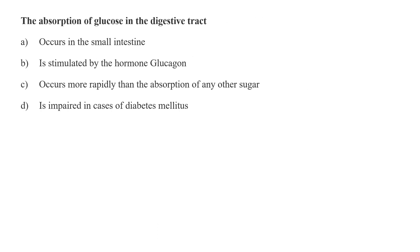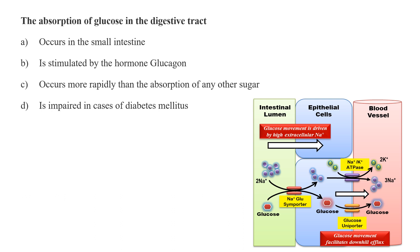The absorption of glucose in the digestive tract occurs at the enterocytes, that means the cells of the small intestine. So here option A is the correct answer.